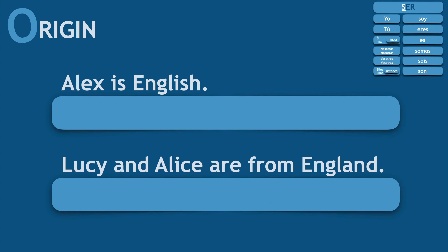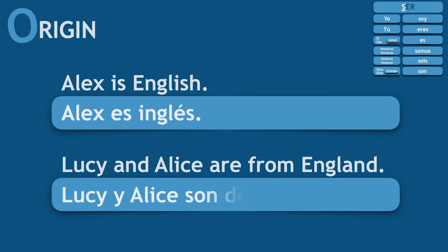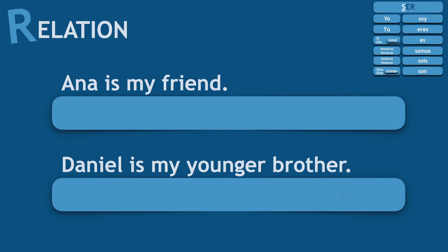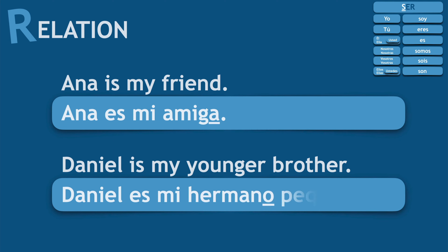For origin: Alex is English — Alex es inglés. Lucy and Alice are from England — Lucy and Alice son de Inglaterra. For relation: Anna is my friend — Anna es mi amiga. Daniel is my younger brother — Daniel es mi hermano pequeño.